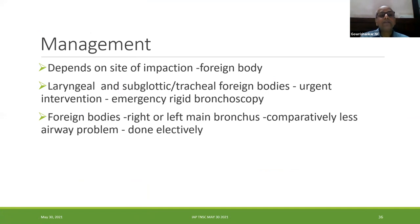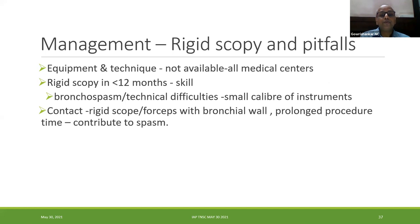Management — removal is the treatment in foreign body aspiration, and it depends on the site of impaction. Emergency rigid bronchoscopy is indicated especially if the foreign body is in the larynx, subglottis, or trachea causing central obstruction. If it is in one of the main bronchi, it can be done electively. Rigid bronchoscopy is not available in all centers, and not all ENT surgeons are skilled in performing rigid scopy in small children, especially under 12 months.